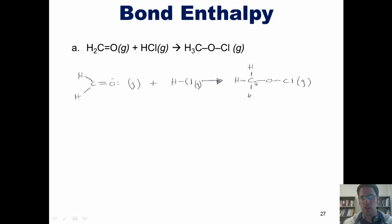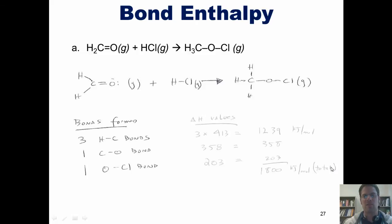Looking at my Lewis structure up here, you can see that the right side of the equation, our product has three total hydrogen-carbon single bonds, one carbon-oxygen single bond, and one oxygen-chlorine single bond. If I go back to our table from earlier, I can see the values in kilojoules per mole of each of those bonds.